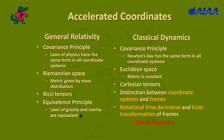The consequences for classical dynamics are that we have to distinguish between coordinate systems and frames. In order to formulate our equations in an invariant tensor form, we need two kinematic elements: the rotational time derivative and Euler's transformation of frames. That is what I call tensor dynamics.